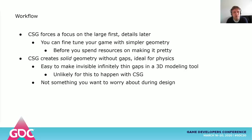CSG forces you to consider the larger rough shape of a level before diving into the visual details. With starting with rougher shapes, you can quickly start playtesting and refine your gameplay before you spend lots of resources on making it look good. At this stage you should be more concerned with things like line of sight, where the player and other characters can actually walk, what they can interact with, and what the flow of your area is. 3D modeling tools work on a much lower level with primitives like triangles and quads — it's a less forgiving environment and it's much easier to get lost in detailing instead of focusing on gameplay.